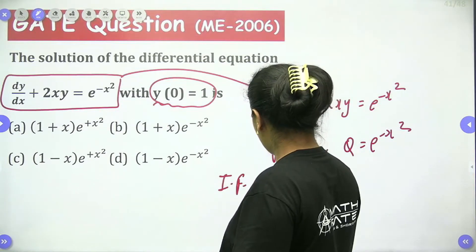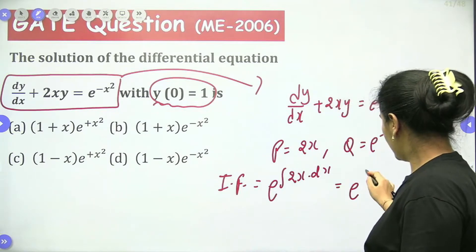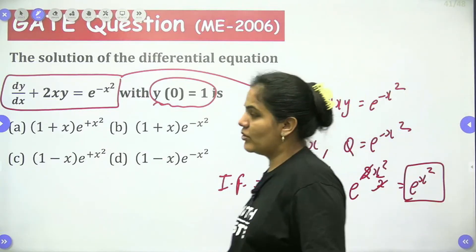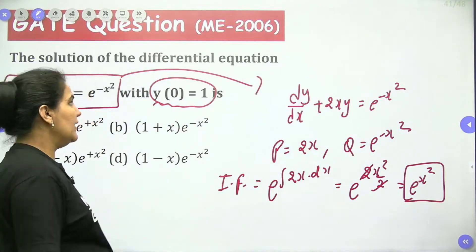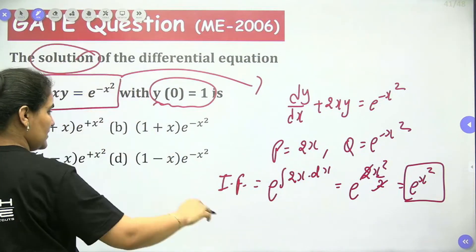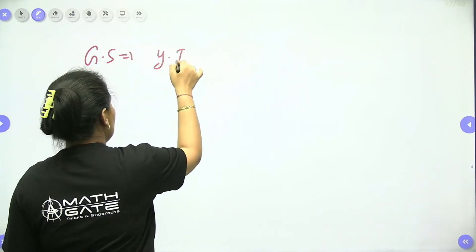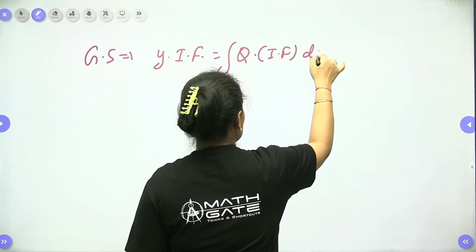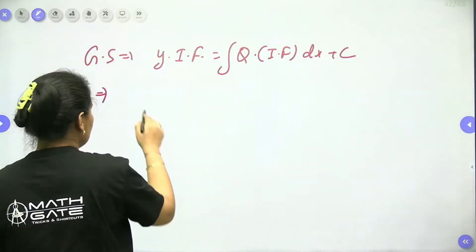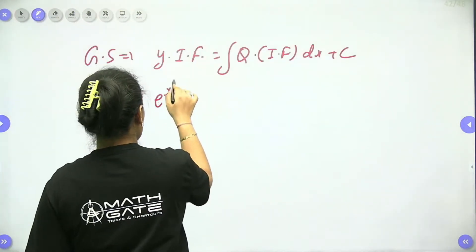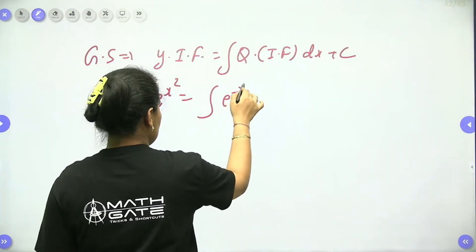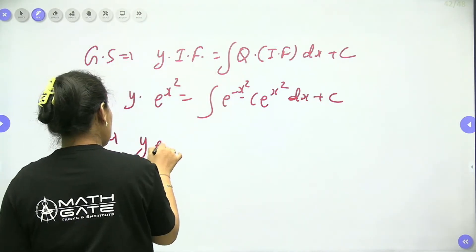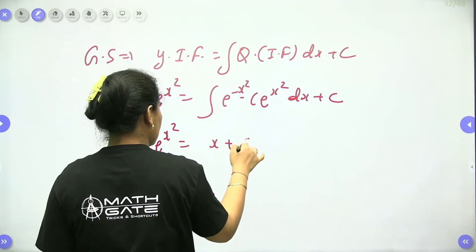Let's find the integrating factor: e to the power of the integral of 2x dx, which gives e to the power x squared. So the integrating factor is e to the power x squared. The general solution is y times the integrating factor equals the integral of q times the integrating factor dx plus c. So y·e^(x²) equals x plus c.